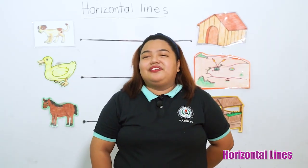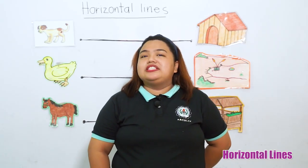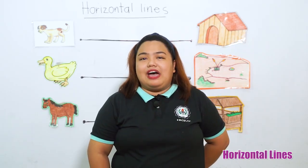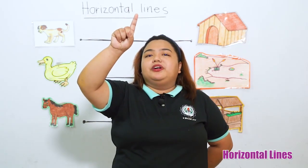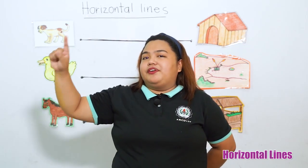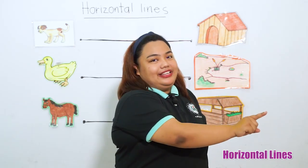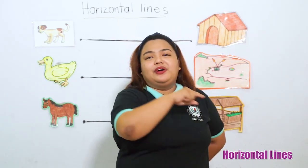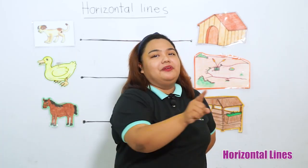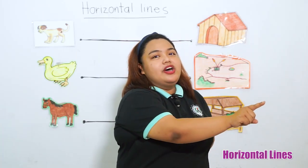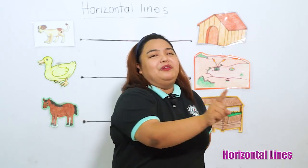That is how you write a horizontal line. Once again, can you please repeat after me? Pointer's up. We're going to start from left, going right. Another one, left, going right. Once more, left, going right.